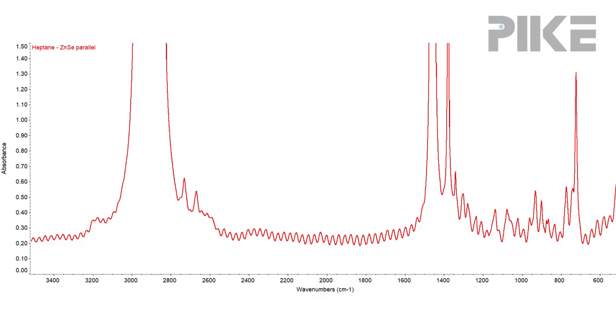Hello and welcome to the tip of the week. Today let me show you a spectrum of heptane collected using our demountable cell. The path length was 0.1 millimeters and I used zinc selenide windows.